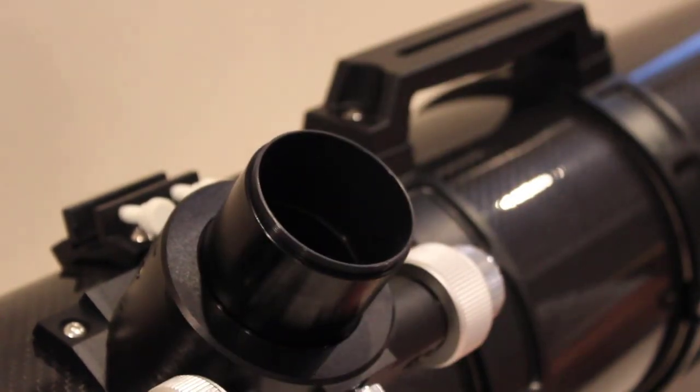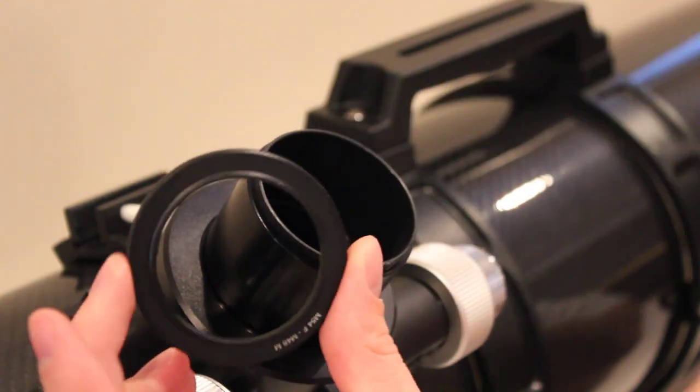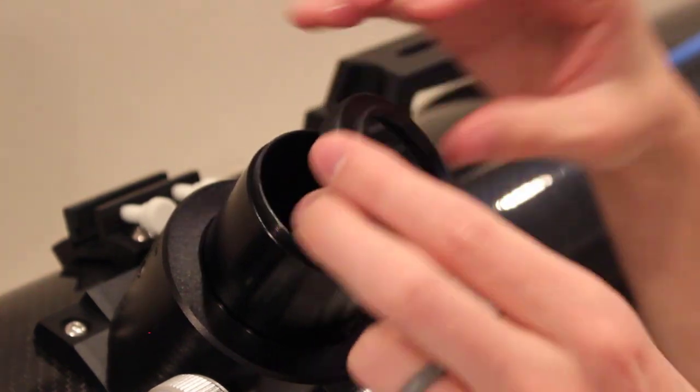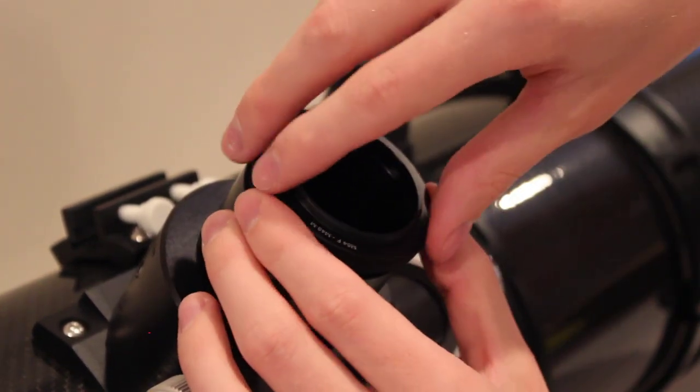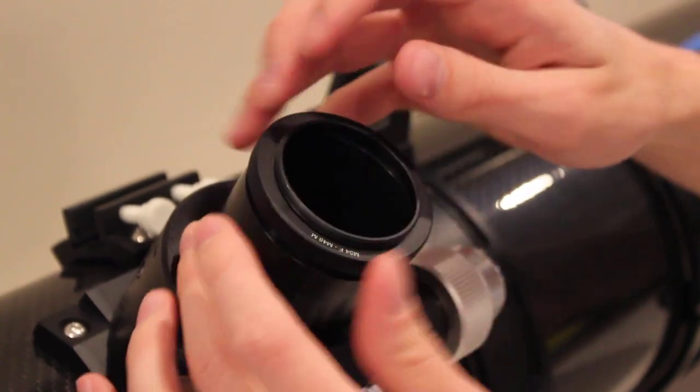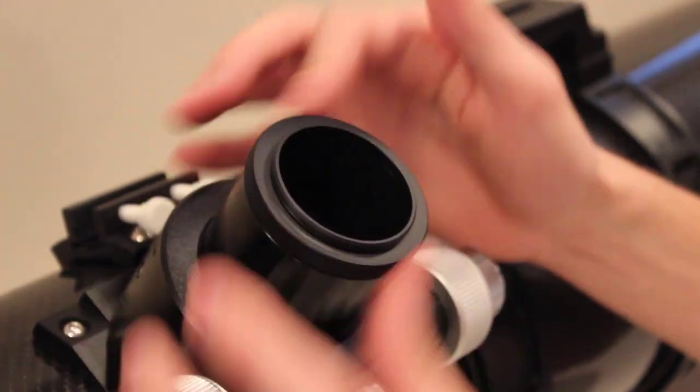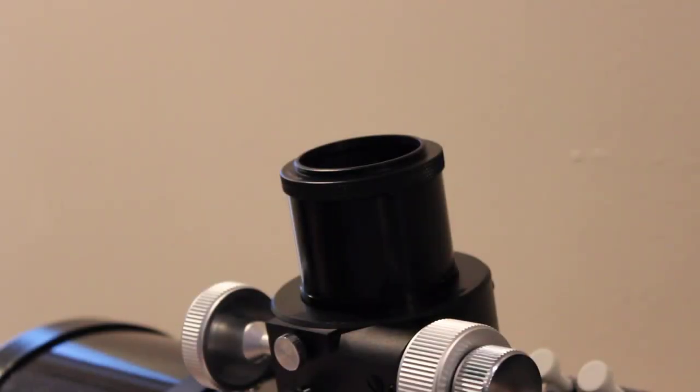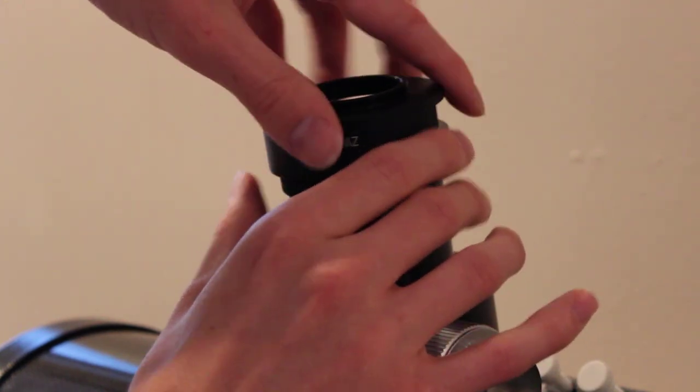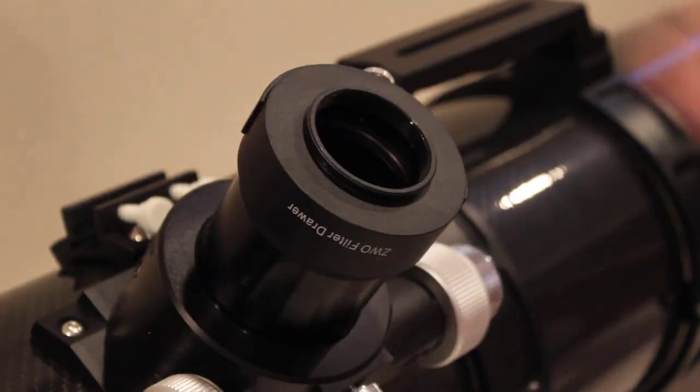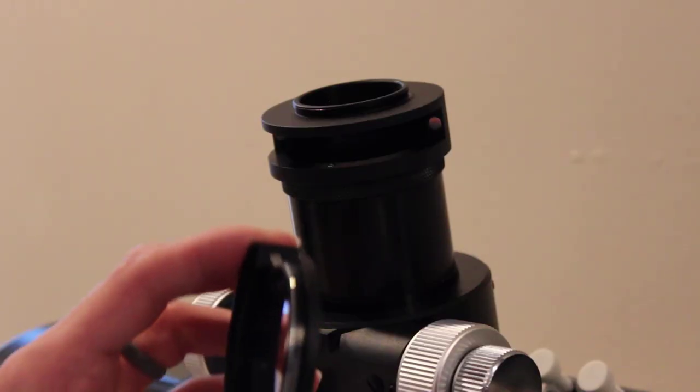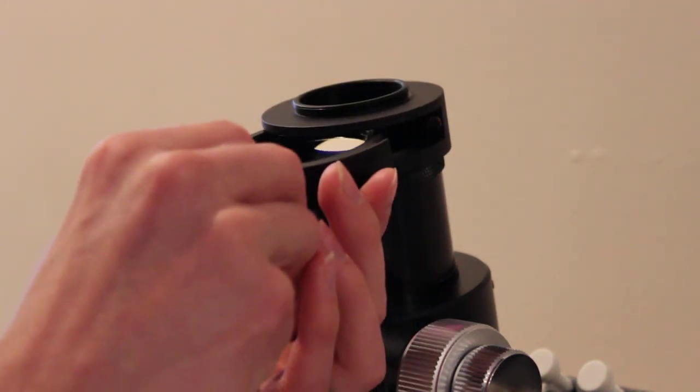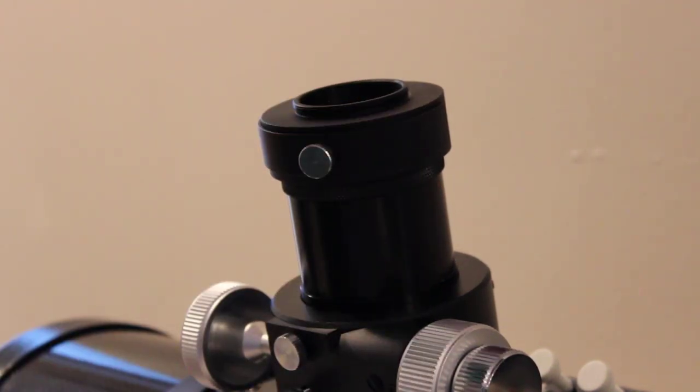Alright, there we go, so that reveals the M54 male threads. And then I got a blue fireball M54 female to M48 male adapter. So I'm just going to screw that into the focuser. And then I'm going to screw on the filter drawer on top of that. And then here's my filter slider. So this is an OptiLong L-Extreme filter, and I can just slip it right in and put my camera on top.